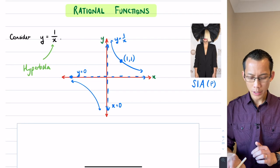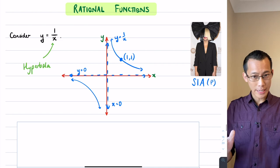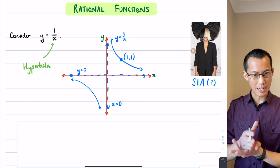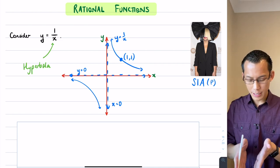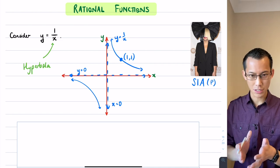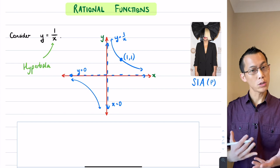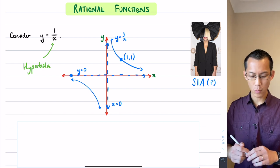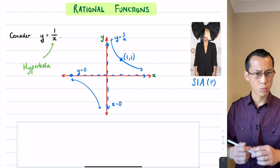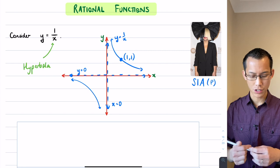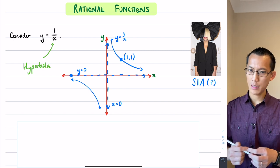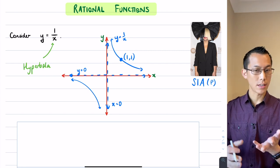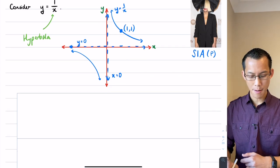Now what I want to do is, before we get into the worked examples, dive a little more deeply into understanding the features of this. We've talked about asymptotes before with exponentials and logs, but with hyperbolas and rational functions you have to be a little more cautious, so it's worth actually thinking in more detail about them.